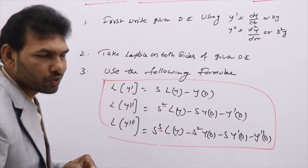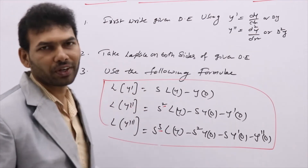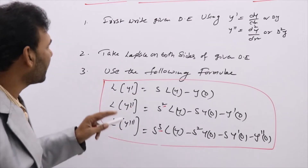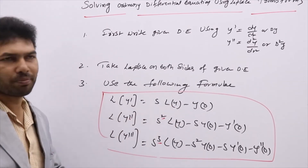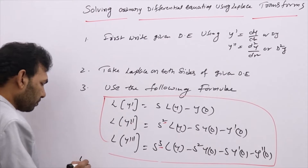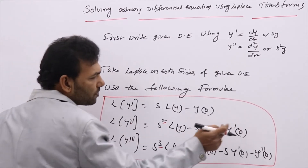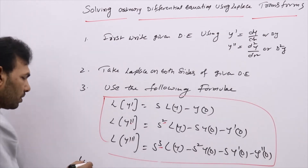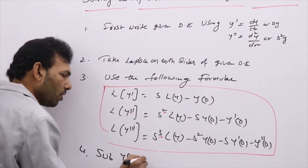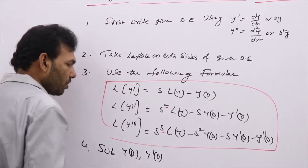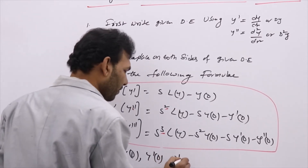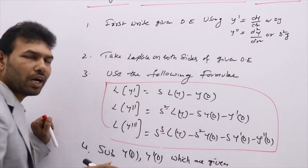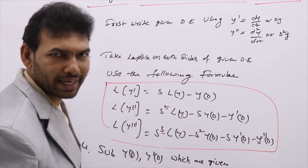Use these formulas because in the first step you will get L{y'} and L{y''}; replace each using the corresponding formula. Now, y(0) and y'(0) are initial conditions given in the problem — substitute those values. If they are not given, keep them as y(0) and y'(0), or assume them as constants like K.